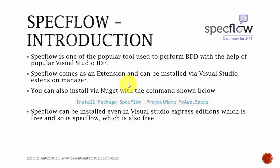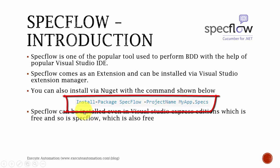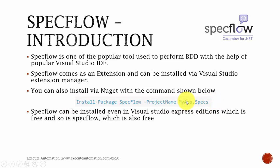SpecFlow can be installed as an extension using the NuGet package. The command is: Install-Package SpecFlow -ProjectName MyApp.Spec. This is the command you put in the Package Manager of Visual Studio, which will automatically install the package from NuGet. You can also download the SpecFlow package from their own website and install it in your Visual Studio.